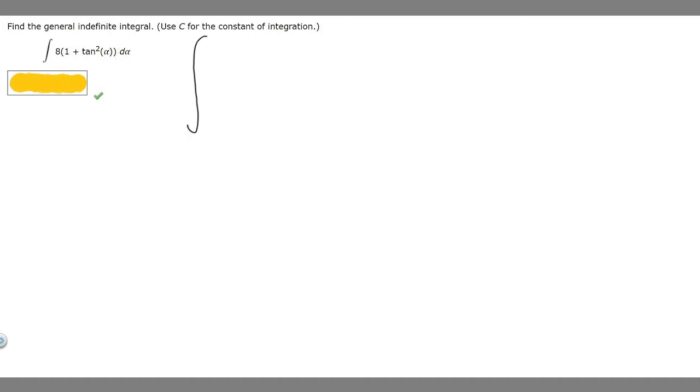Let's start this by rewriting our integral. In order to solve this problem, there's one thing you need to know. Based on the Pythagorean identities, 1 plus the tangent squared of theta, or any variable basically, is going to be equal to the secant squared of that variable.